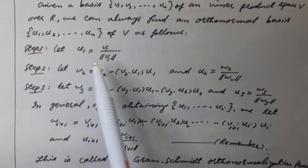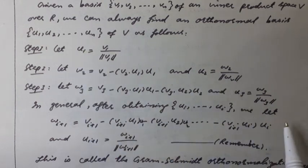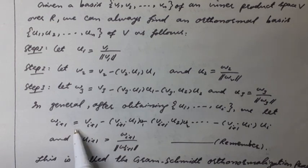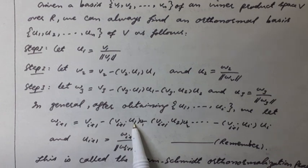In general, after obtaining U1, U2, U3, ..., Ui, we let Wi plus 1 is equal to Vi plus 1 minus the inner product of Vi plus 1 with U1 times U1